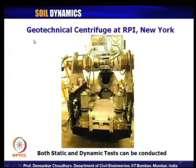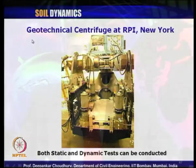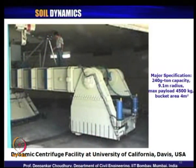All other centrifuges available in the US can conduct only static tests. Another facility not shown here is at the University of Cambridge in London, which also has a centrifuge capable of dynamic testing. The world's biggest centrifuge is located at University of California, Davis, USA, with a major specification of 9.1m radius — a diameter of about 18m, roughly equivalent to a 6-storey building in the horizontal direction, and just double the size of the IIT Bombay centrifuge.